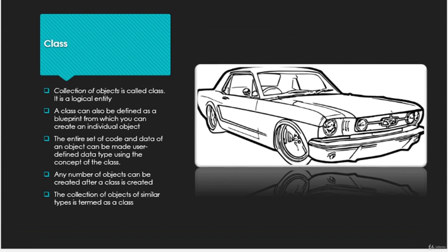In the picture, a car class is shown. Car can have any number of objects — Tata, Maruti, Fortuner, Lamborghini, and Porsche all have the car class functionality. Car is a single class, but we can create any number of objects to access that car's properties and behavior. The entire set of code and data of an object can be made into a user-defined data type using the concept of class. Any number of objects can be created after a class is created. A collection of objects of a similar type is termed as a class. Basically, class is a blueprint.